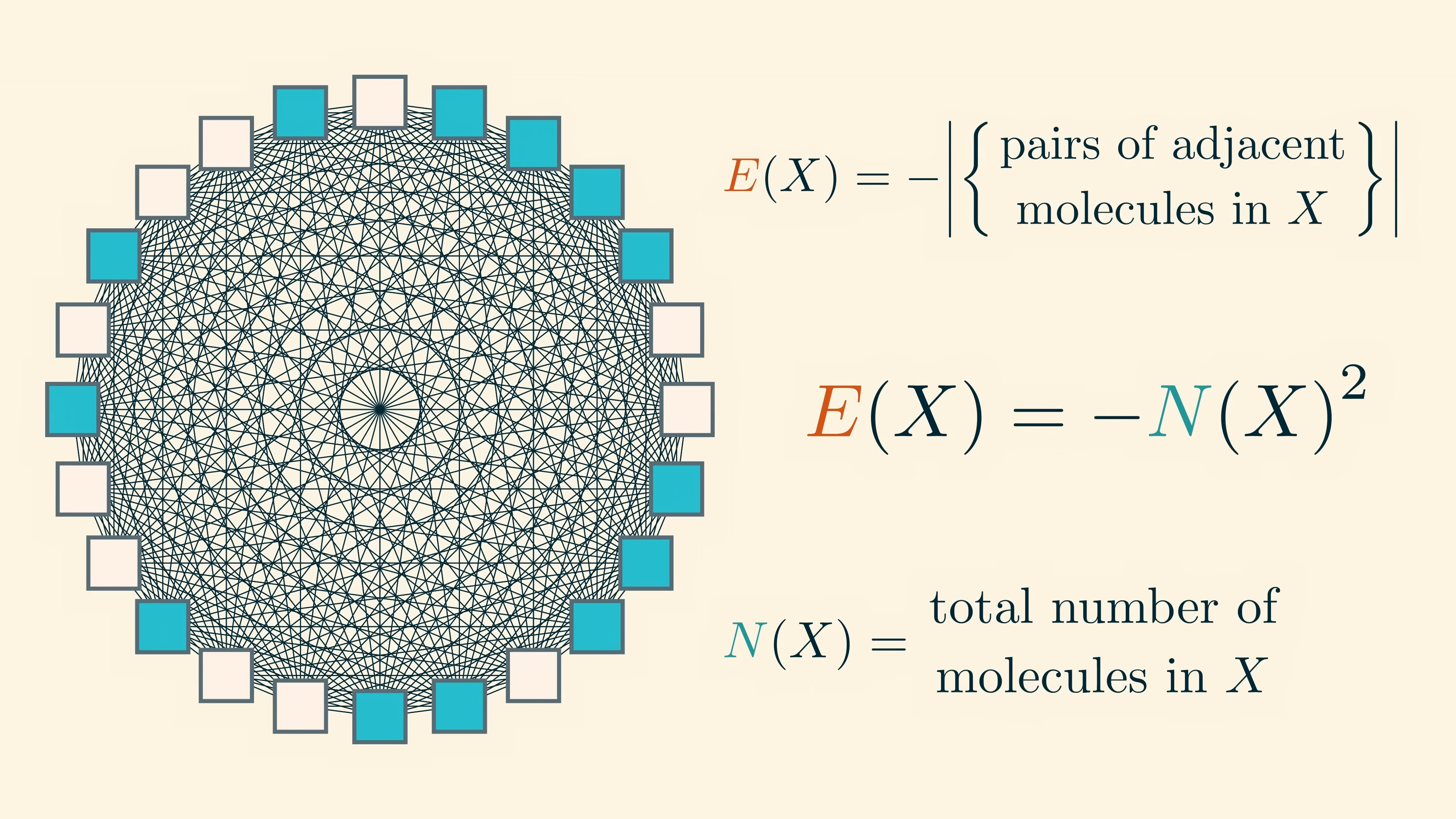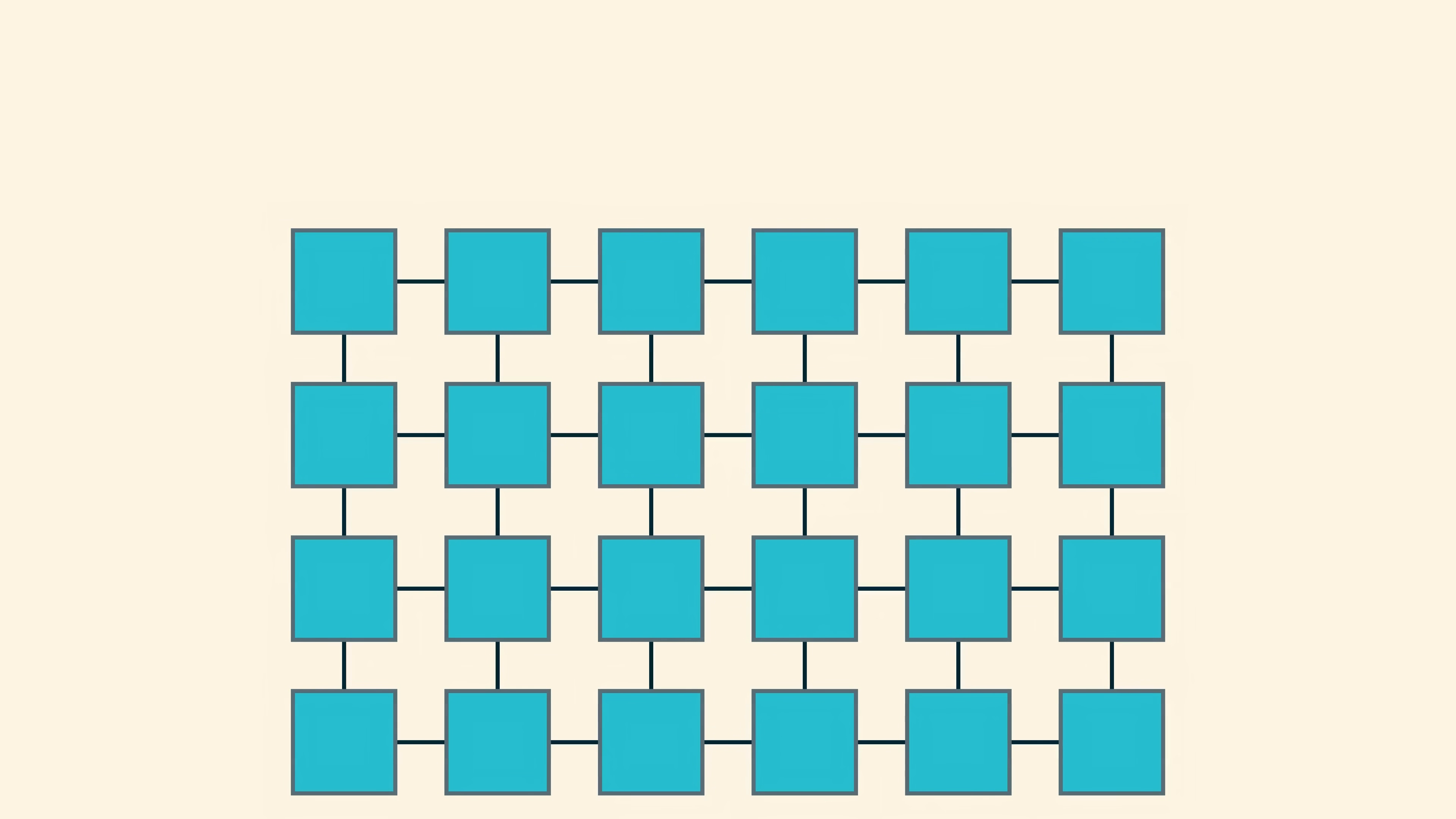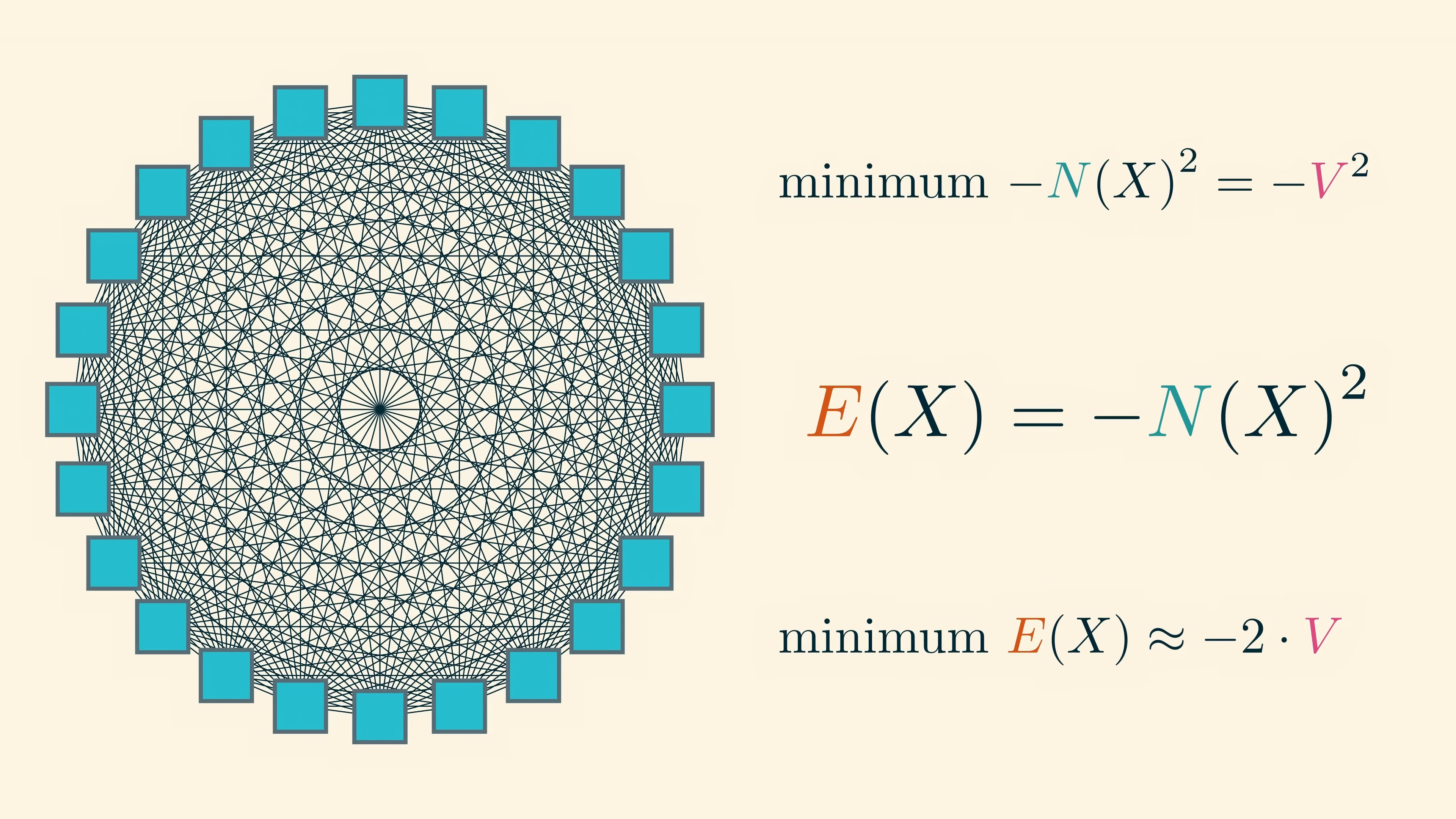In the original model, the minimum possible energy is attained by the microstate with all lattice sites containing a molecule. The energy of this microstate is about minus two times v, where v is the volume, which is the total number of pixels. This is because most of the pixels have four neighbors, ignoring the relatively minor discrepancies along the boundary, and each pair is counted twice. But in our new model, the minimum energy is minus v squared. To fix this, we'll just multiply the energy function by 2 over v, so that the two models have roughly the same minimum energy.